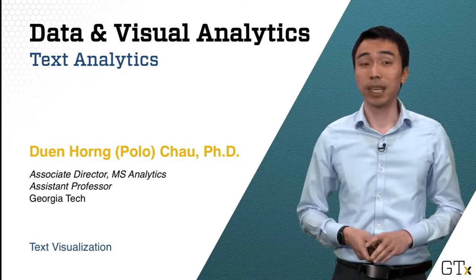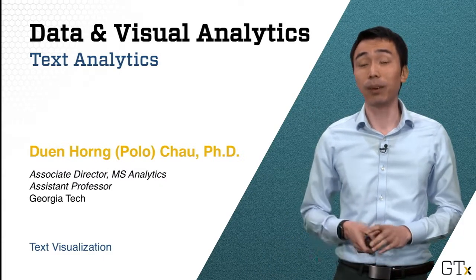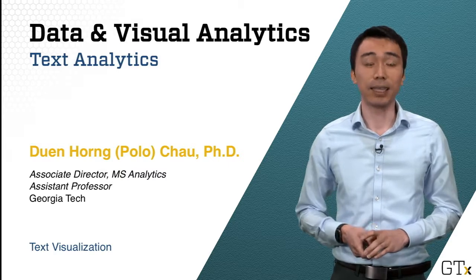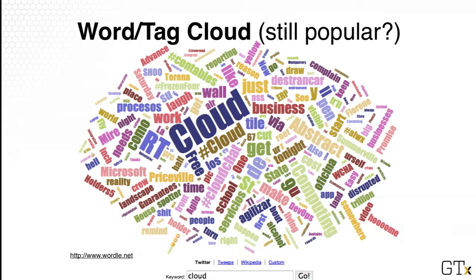Hi everyone, we're going to continue with text analytics and today we're going to look at a few popular ways of visualizing text and text documents. So a common way to visualize text is using Word or Tag Cloud. It's very popular because it is a very visually interesting way to look at the data, although it may not be very informative.